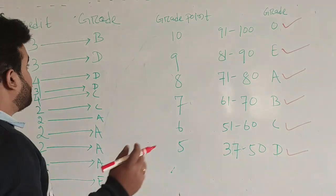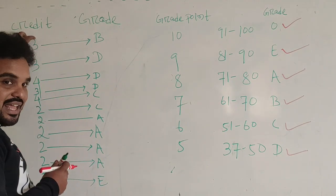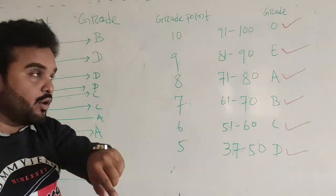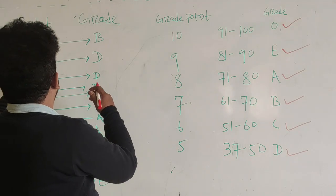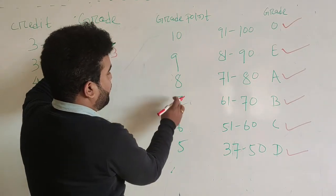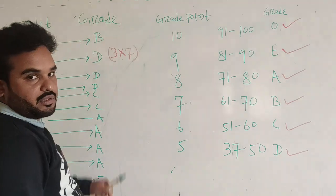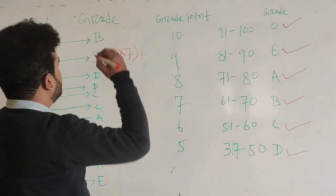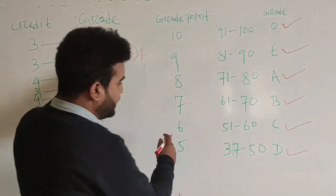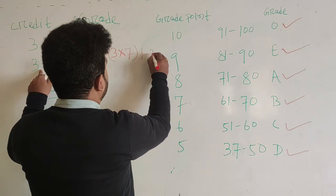Then we will calculate. First of all, we will see credit point is 3, you have scored B grade. You have credit point 3 — write 3 into 7. Then credit point 3, you cleared D grade — so D grade is 37 to 50 and grade point 5, so it is 3 into 5.